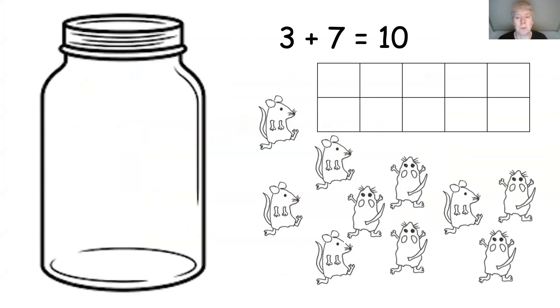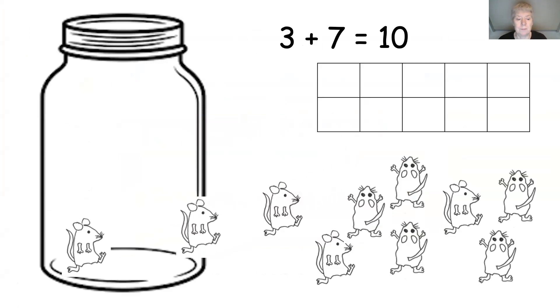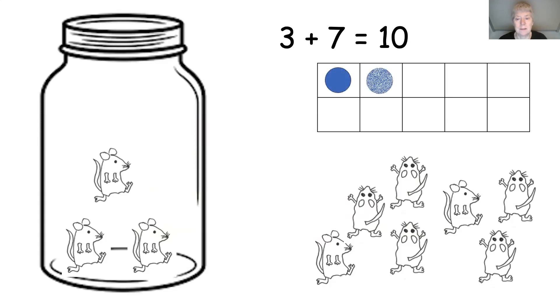So here's our first number pair. Three plus seven makes 10. So I'm going to put three of the mice into the jar. Can you put three counters on your tens frame? Pause the video if you need time to do it. But when you've done it should look like this. There we go. Three counters are on the frame. How many spaces are left on the tens frame?